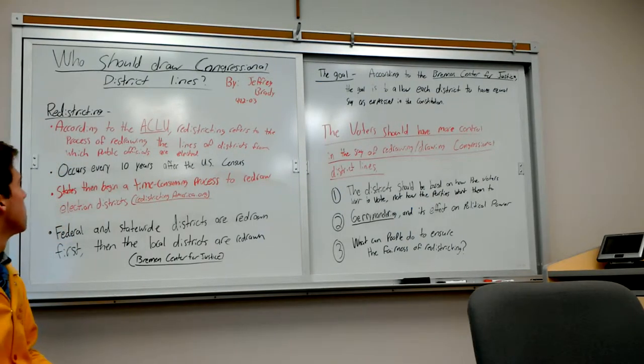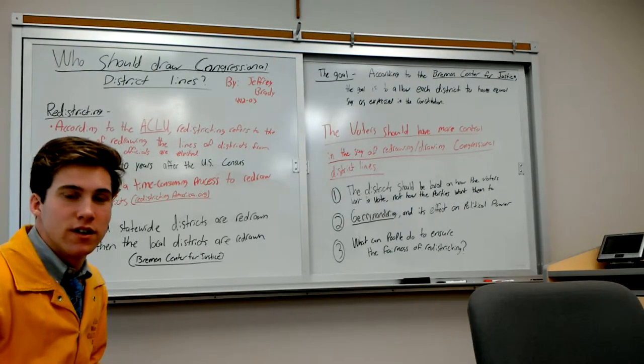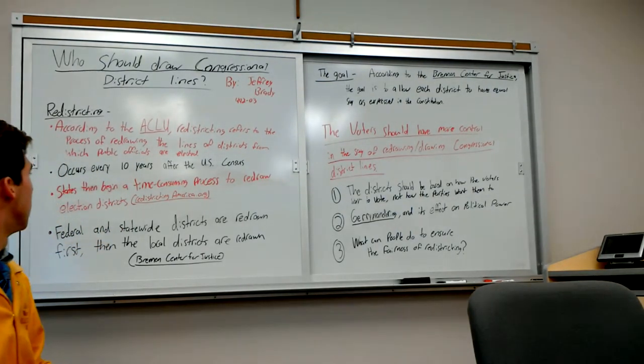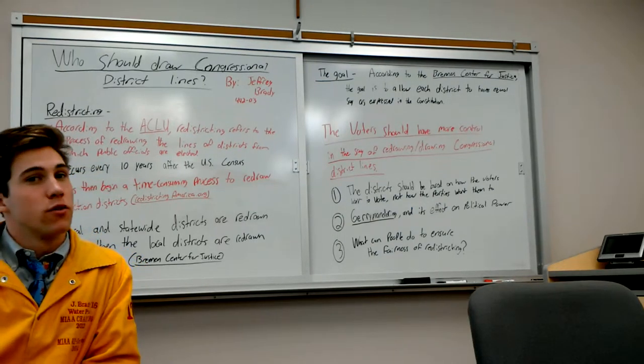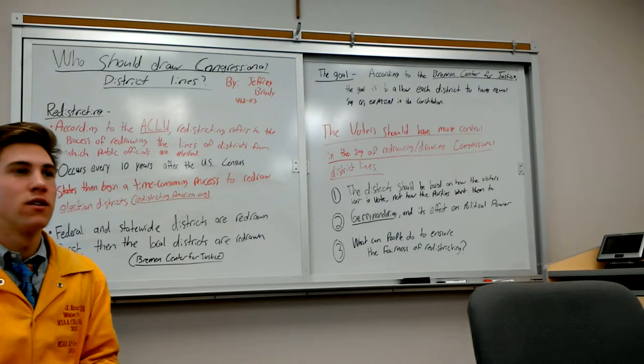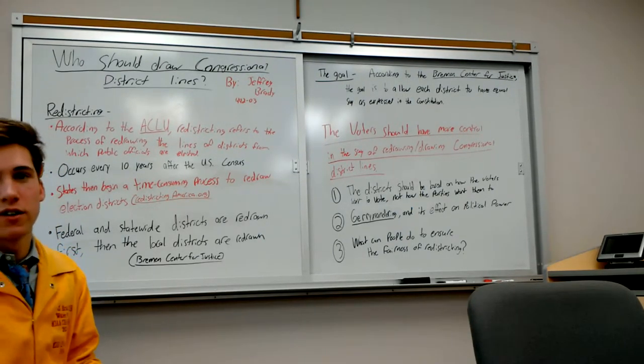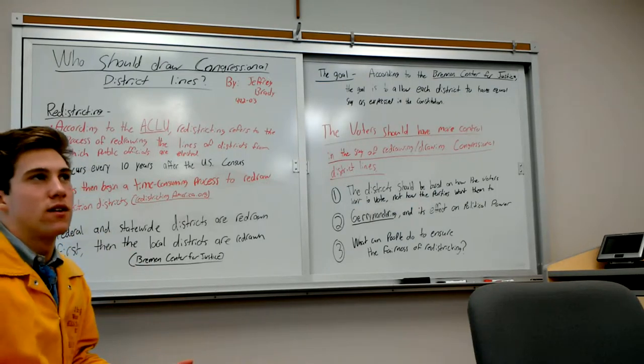This happens every 10 years after the US census occurs. States begin a time-consuming process to redraw these lines and election districts, and that's according to redistrictingamerica.org. Normally, the process is the federal and state districts are drawn first, and then it goes to the local districts.